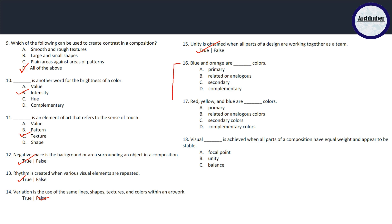Visual balance is achieved when all parts of a composition have equal weight and appear to be stable. What is it - visual focal point? Visual unity? No, but visually appealing means the balance of the composition, so C is the correct answer.